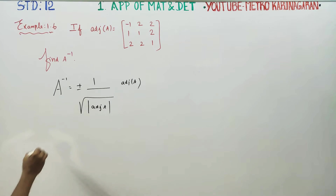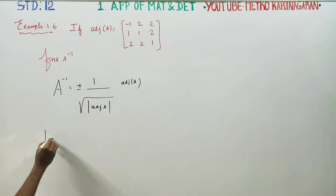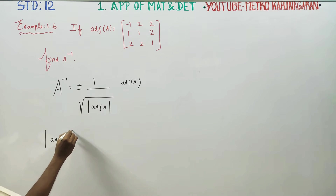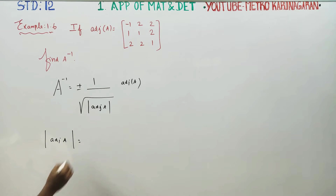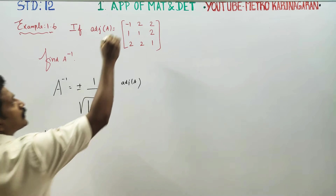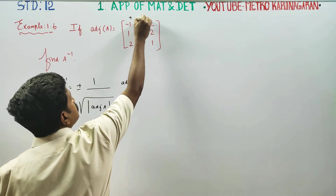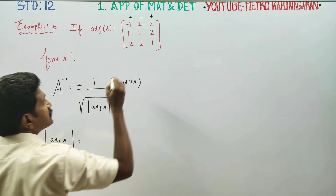The determinant of adjoint A is called the sum of kittadatta. I am going to find the determinant of adjoint A. Plus, minus, plus — these are the cofactor signs.